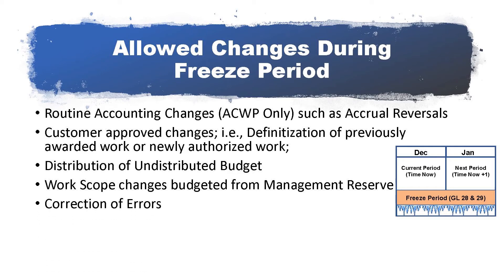Errors that are discovered in earned value data need to be corrected promptly. If the error is in previously reported or current period data, these adjustments are reflected in the current periods of Formats 1 and 2, and explained in Format 5. There can be a broad range of reasons that qualify as errors; however, poor planning or significant variances do not qualify.